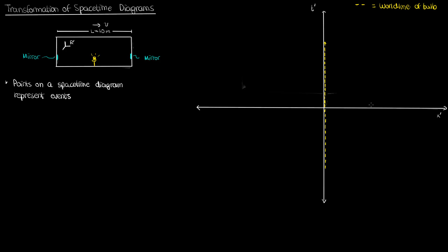Meanwhile the world lines of my two mirrors are also vertical because the mirrors are also not going anywhere in the reference frame of the train. These vertical world lines are parallel to the world line of the bulb, with one world line situated at x' equals negative 5 (the left mirror) and the other at x' equals 5 (the right mirror).